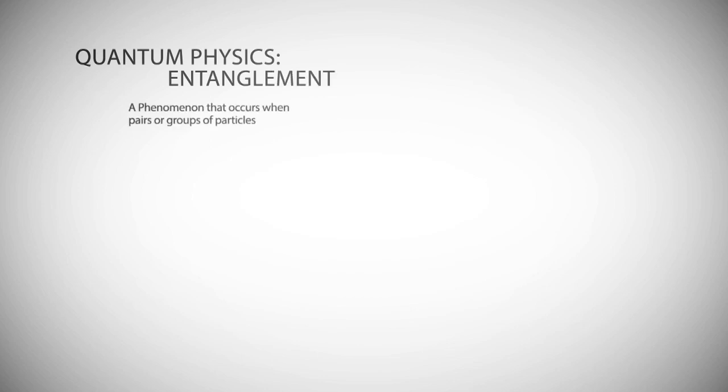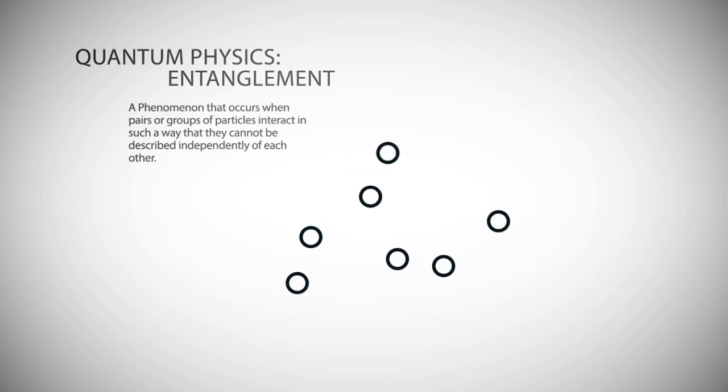Another quantum effect that's very important for quantum computing is called entanglement. Entanglement means that at the subatomic level, the quantum states of two or more particles become linked to each other. They all form part of a group that all behave aligned.